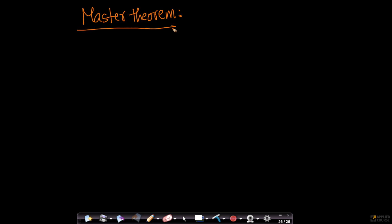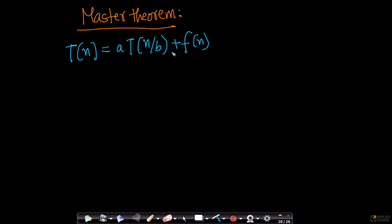There is a very rigorous proof of the master theorem that we will not be going into in this course because it is slightly non-trivial. The master theorem works when you have recurrence relations of the form T(n) = a·T(n/b) + f(n), where a is greater than or equal to 1 and b is greater than 1.